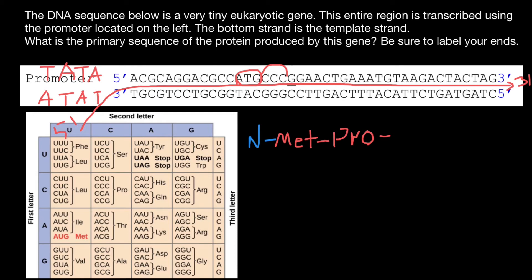The third codon is GGA, which is glycine. So the third amino acid is going to be glycine. The next codon is ACT — in messenger RNA, T is substituted with uracil, so this becomes ACU, which is threonine. So the fourth amino acid is threonine. The next codon is GAA, which is glutamic acid. So I will continue writing it: GLU.